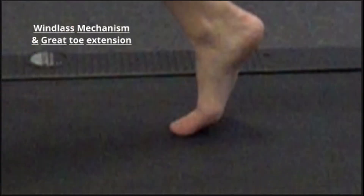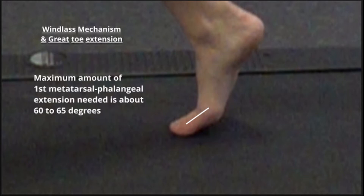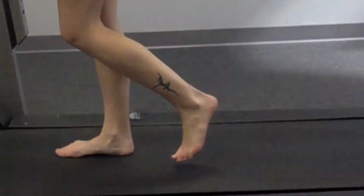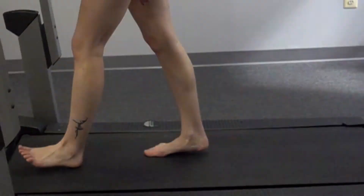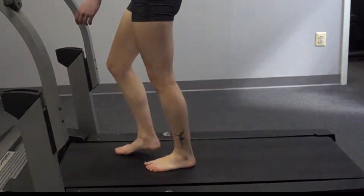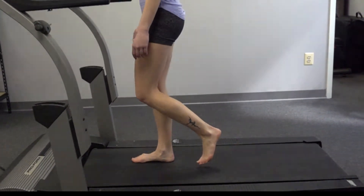Now let's take a look at our foot. We're primarily interested in great toe extension. Extension is part of the windlass mechanism and helps the foot transition into a rigid lever so we can use it for propulsion. We need approximately 65 degrees of extension to have normal mechanics during gait. See if you can identify the increase in the arch during great toe extension on our right foot here during gait. As we transition into pre-swing, the arch of the right foot gets higher.